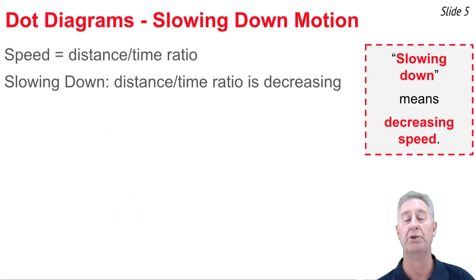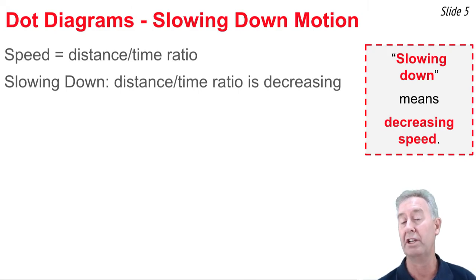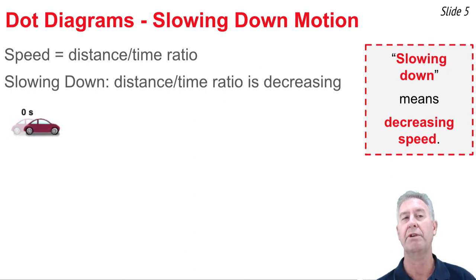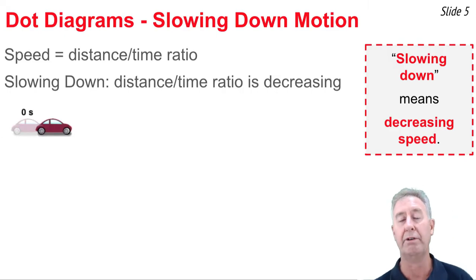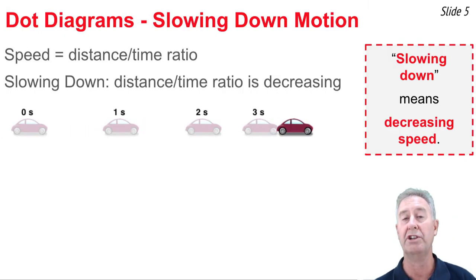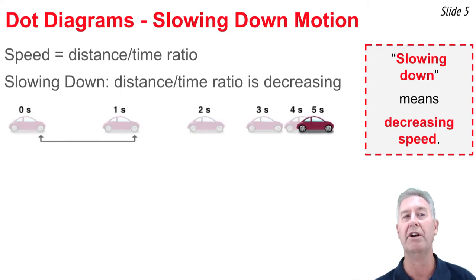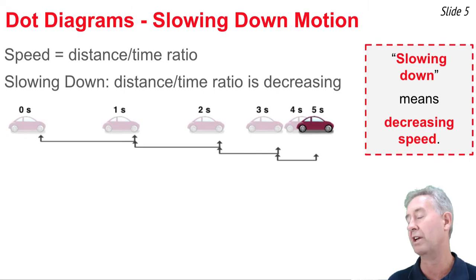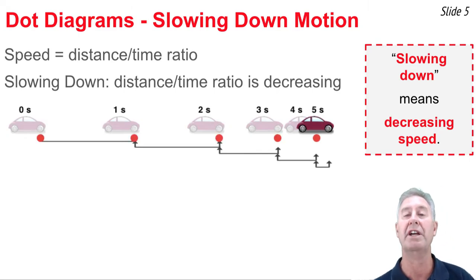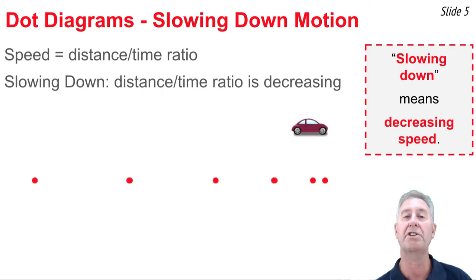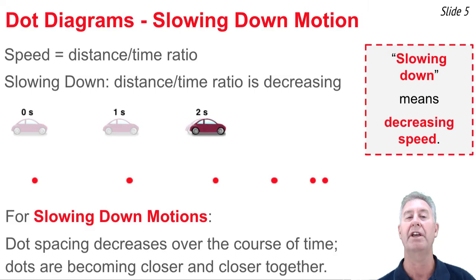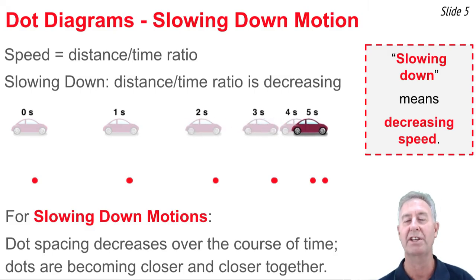Now we're going to look at a dot diagram for slowing down motion. An object that's slowing down is decreasing its speed — the distance traveled in each consecutive second is smaller than the second before. Looking at this car moving to the right and decreasing its speed, we see the position at one-second intervals. Comparing zero to one second, one to two seconds, two to three seconds and so forth, the distances traveled in each consecutive second are decreasing, giving us a dot diagram with decreasing spacing. That dot diagram is characteristic of any slowing down motion.